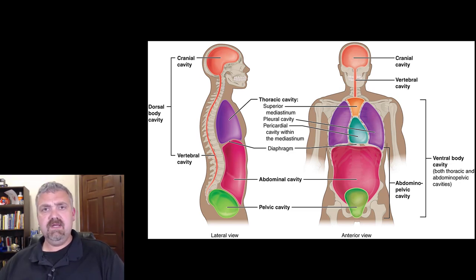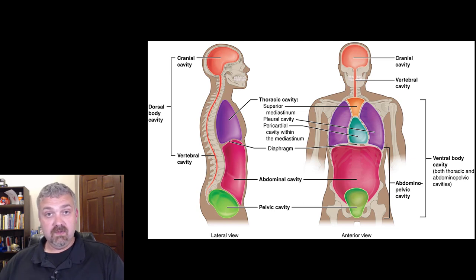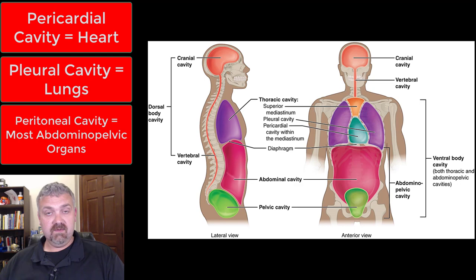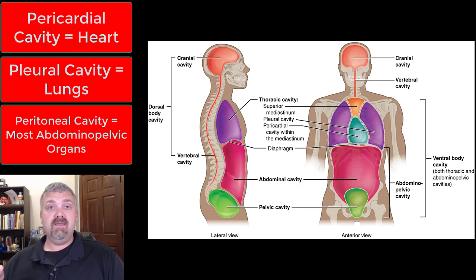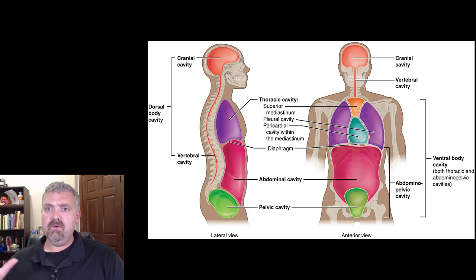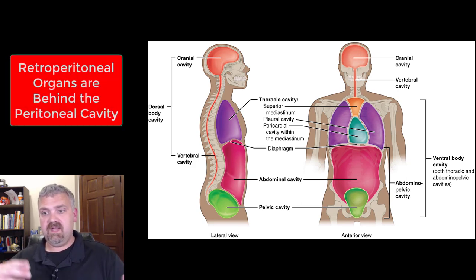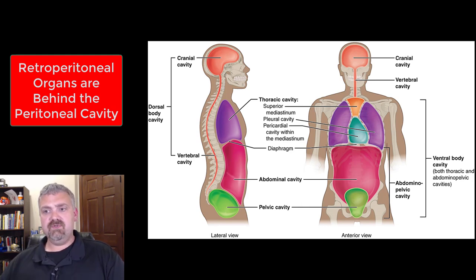So let's talk about the ventral body cavities. These are going to be double membrane cavities lined with a serous fluid — a very watery fluid. The three we have are the pericardial cavity, which lines the heart, the pleural cavity which lines each lung — you see these as purple here — and then we have the peritoneal cavity, which lines most of your abdominal pelvic organs. Later on we'll learn that some of our organs are retroperitoneal, which means they're behind the peritoneal cavity. The pancreas would be a good example, but we'll cover that when we get to those organs.